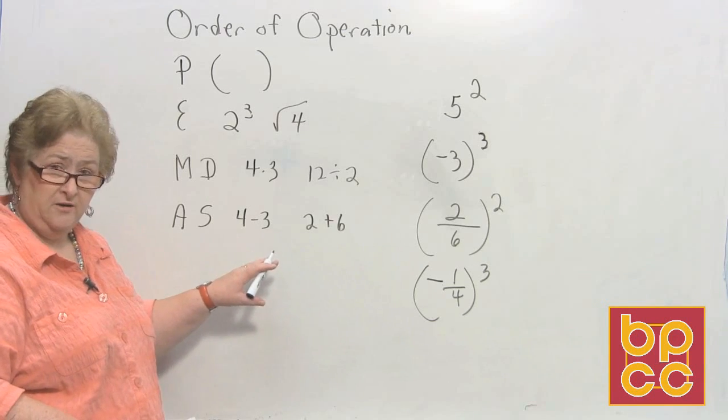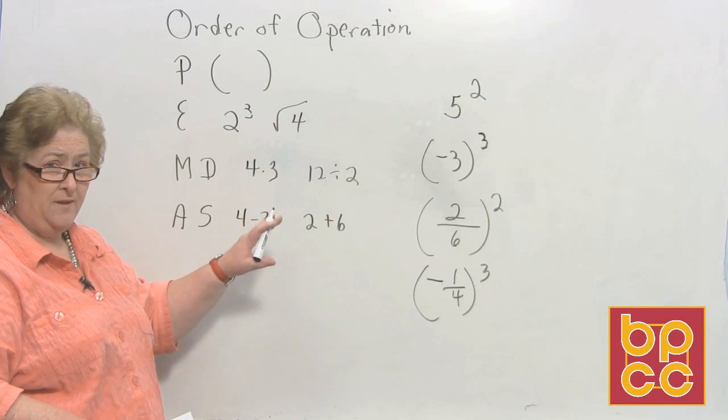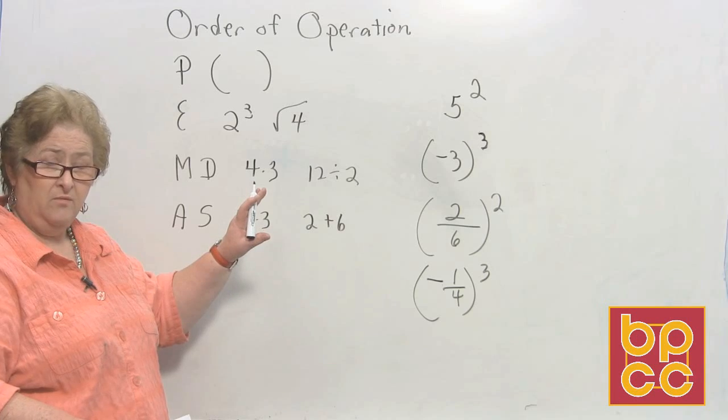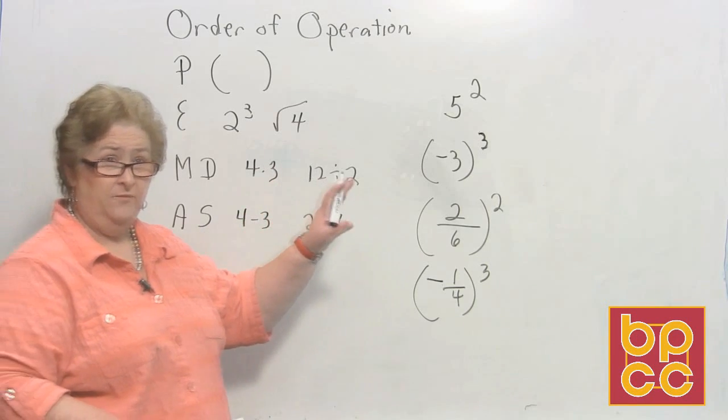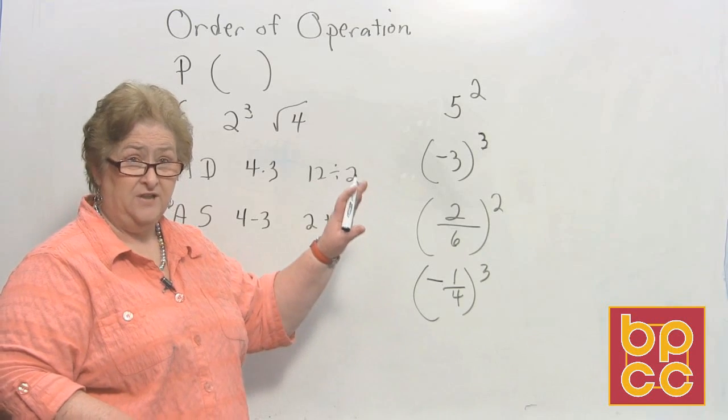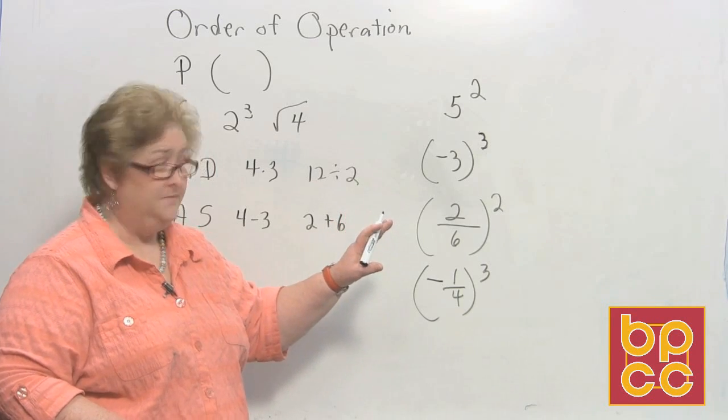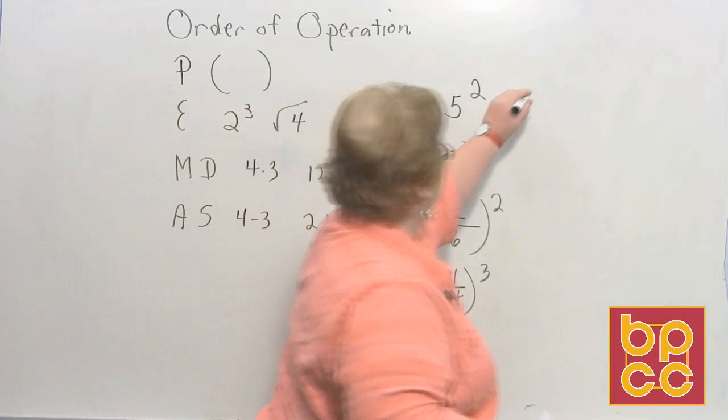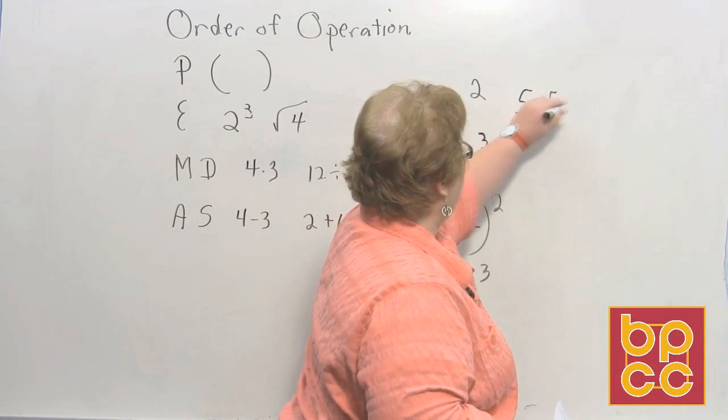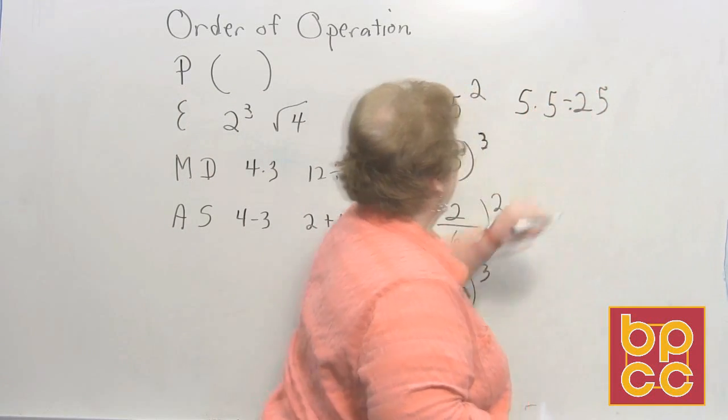Now before we start working any order of operation let's just go back and review a minute our exponents. Example 5 squared if you remember is not 5 plus 5 it's not 5 times 2 is 10. 5 squared means 5 times 5. So 5 times 5 is 25.